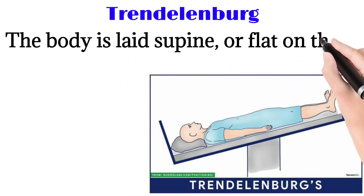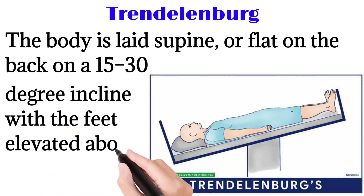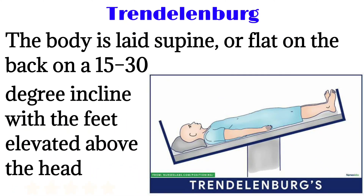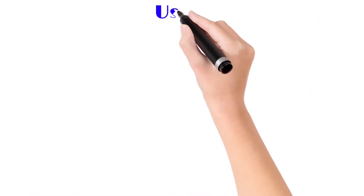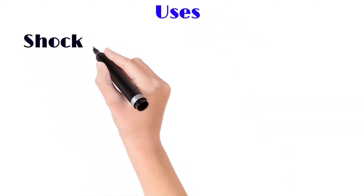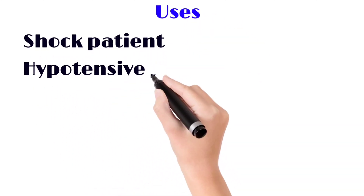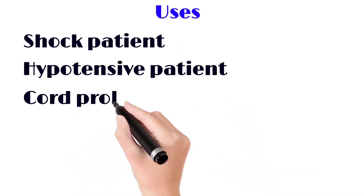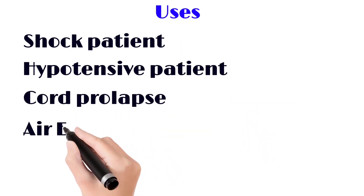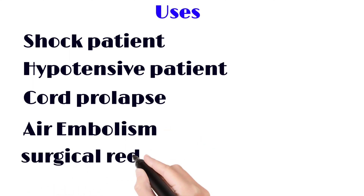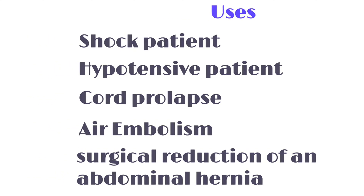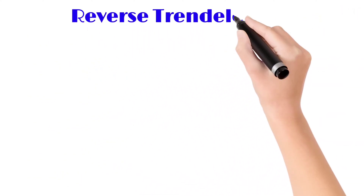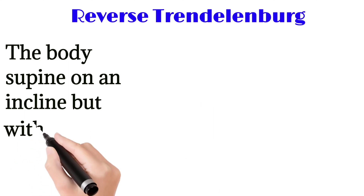Next is the Trendelenburg position — the body is laid supine or flat on the back on a 15 to 30 degree incline with the feet elevated above the head. The head is lower and the feet are inclined 15 to 30 degrees upward. Uses include shock patients — as the head is lower, blood flows more toward the head — hypotensive patients, cord prolapse, air embolism, and surgical reduction of an abdominal hernia.